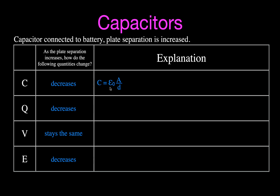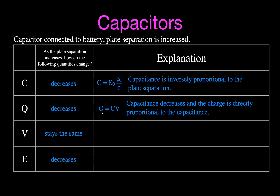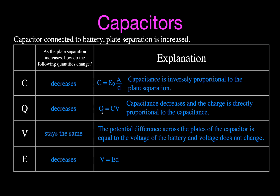Why does the capacitance decrease? Using our equation, we increased the distance, and capacitance is inversely proportional to the distance, so we increase the distance and decrease the capacitance. If we decrease the capacitance, that affects the amount of charge stored because those are directly related - lower capacitance means lower charge. The voltage stays the same because it's just the voltage of the battery. The electric field strength decreases because it's inversely proportional to the distance between the plates.